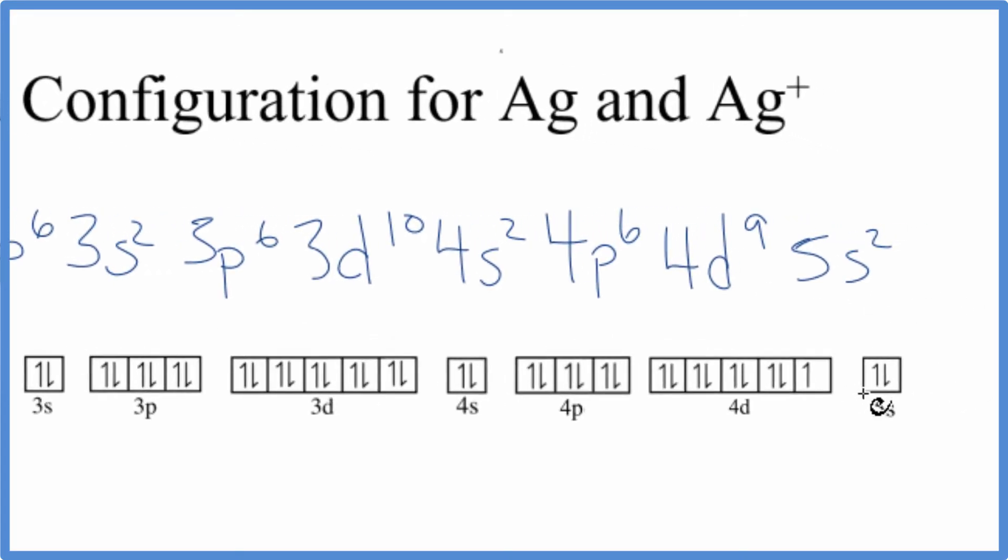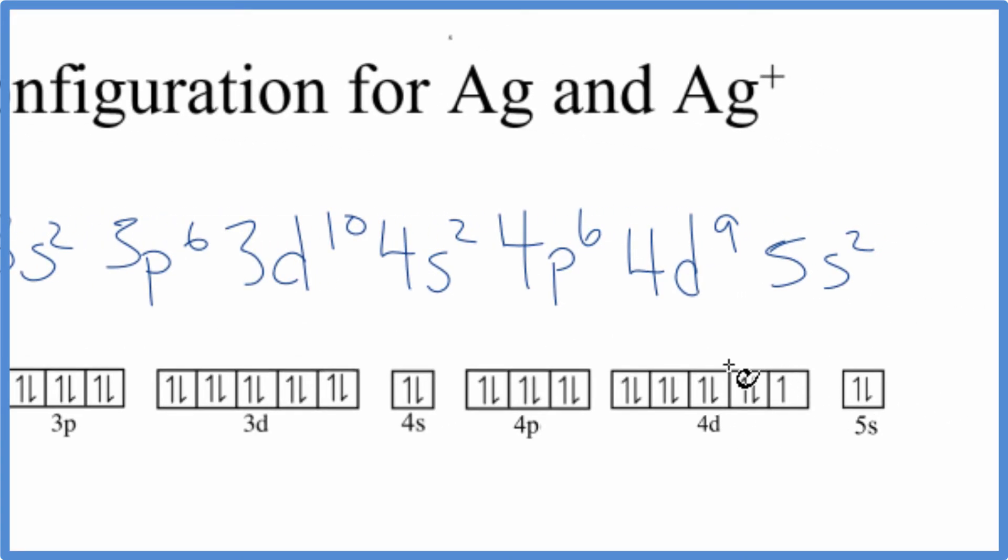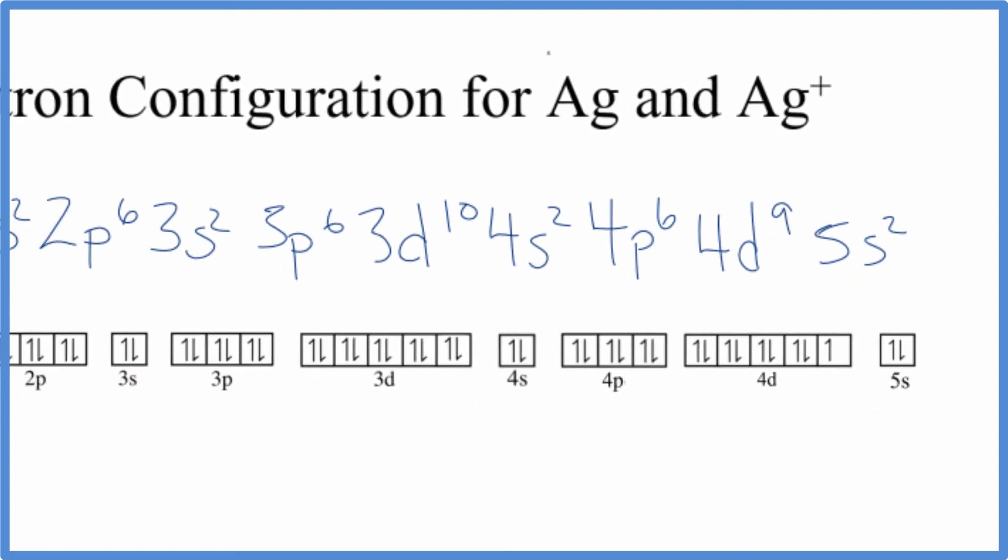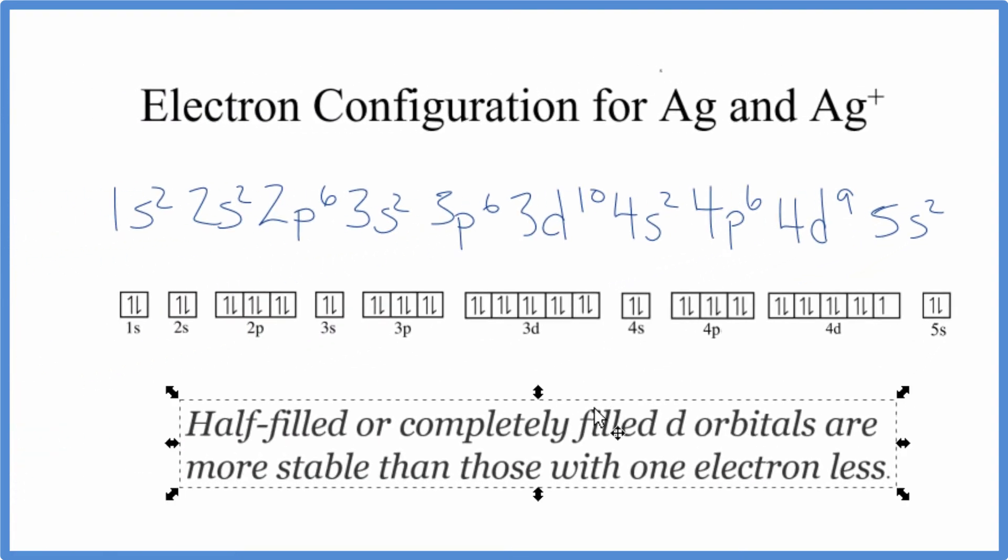If we go out here and look at the 4d and the 5s, we see this 4d is 4d⁹. So 2, 4, 6, 8, 9 electrons. It's not full.